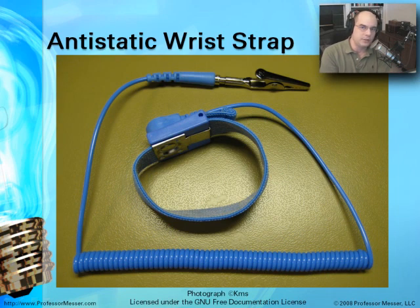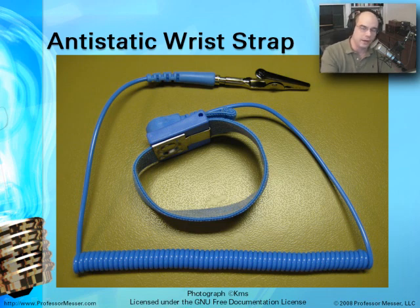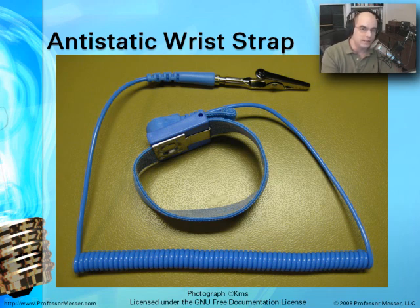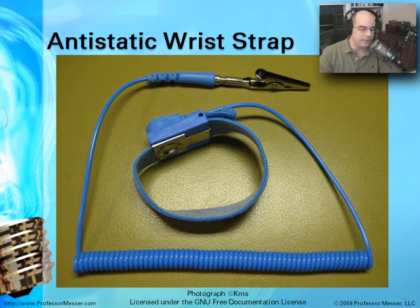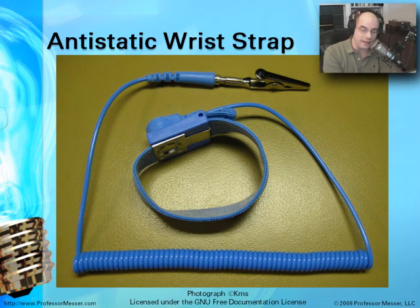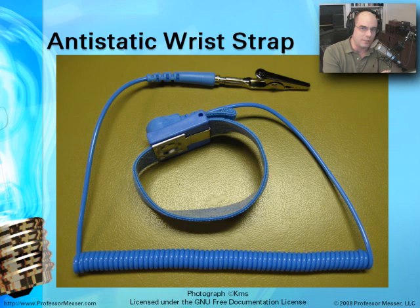This is an anti-static wrist strap. You use it to connect to your wrist and then connect the other end — that metal alligator clip — to a metal component, usually the chassis of the computer system you happen to be working on. What this does is equalize the electrical potential between those two systems, making sure you're all working on the same level so there can't be a discharge from yourself to a piece of electronics. If you're ever installing a very expensive piece of electronics, such as a card that goes into a router or switch, they'll often include a wrist strap with that. Make sure you use it.